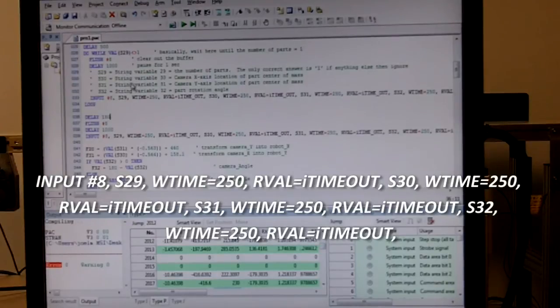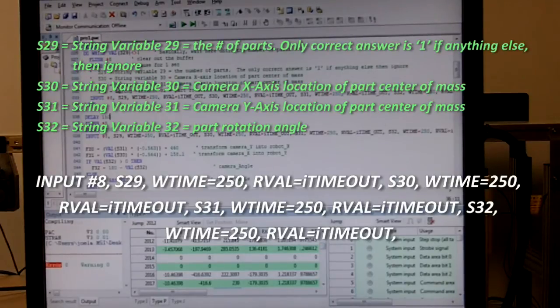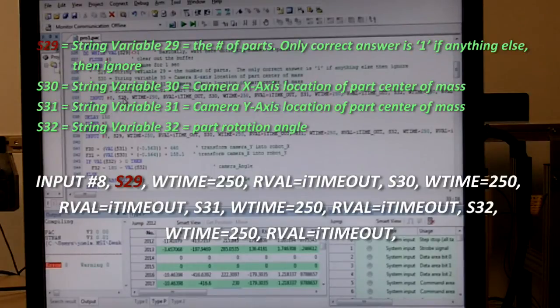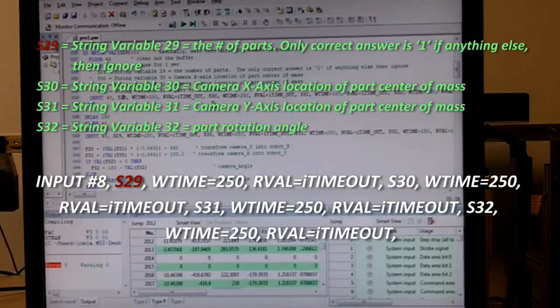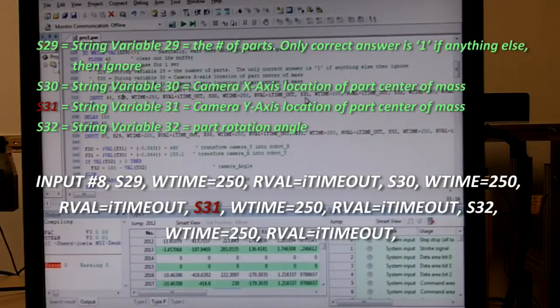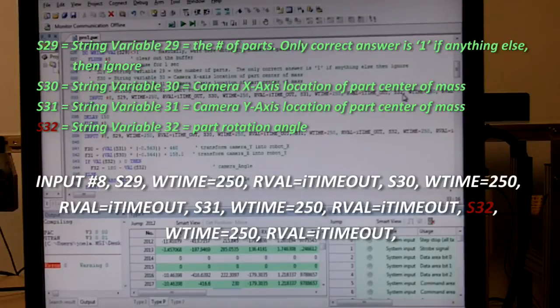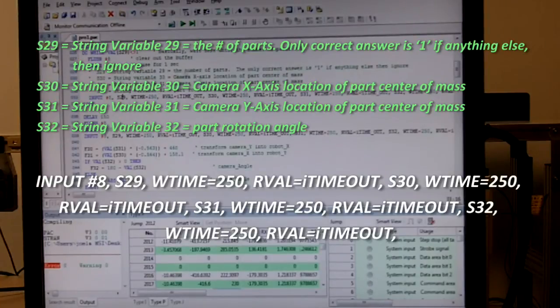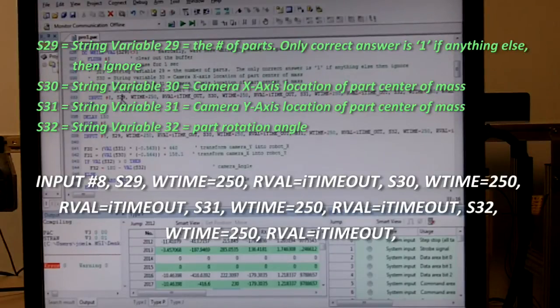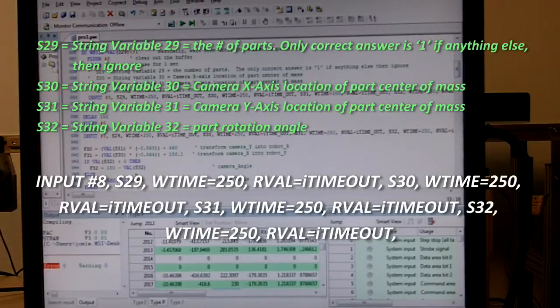We're going to be storing all of the robot data here into four different string variables. S29 is going to hold the number of parts, that variable fg underscore spring. S30 is going to hold the x-axis data of the centroid. S31 is the y-axis data of the centroid. And S32 is the angle of the part relative to the horizontal plane. The robot code is going to sit here constantly collecting that data and evaluating it. And once S29, or the number of parts shown in the field of view, equals exactly one, then the robot code will break out of this and will initiate motion.